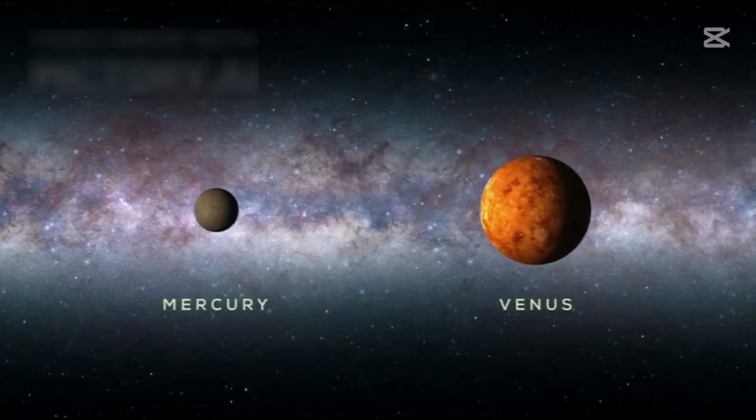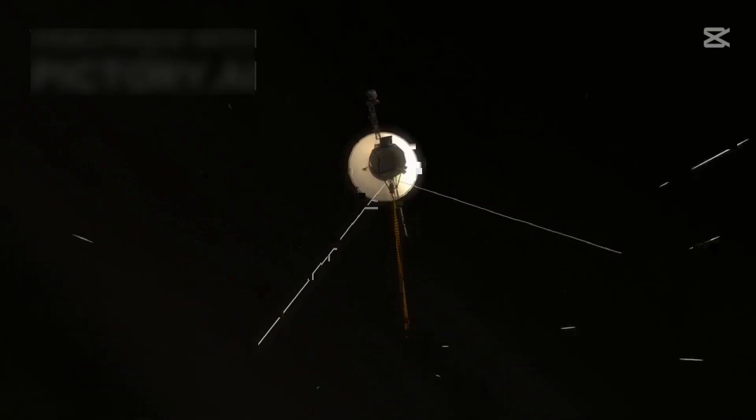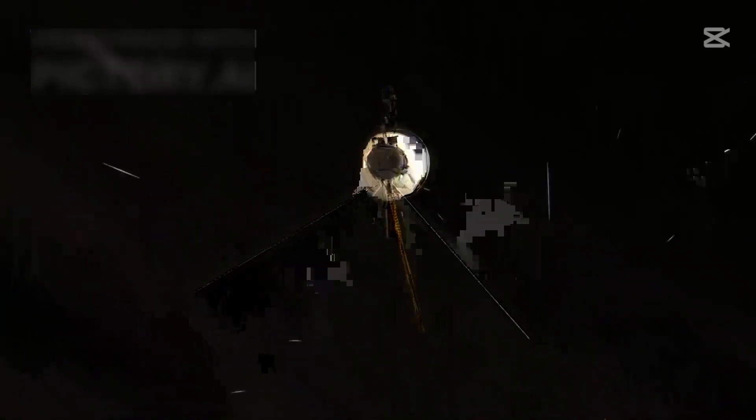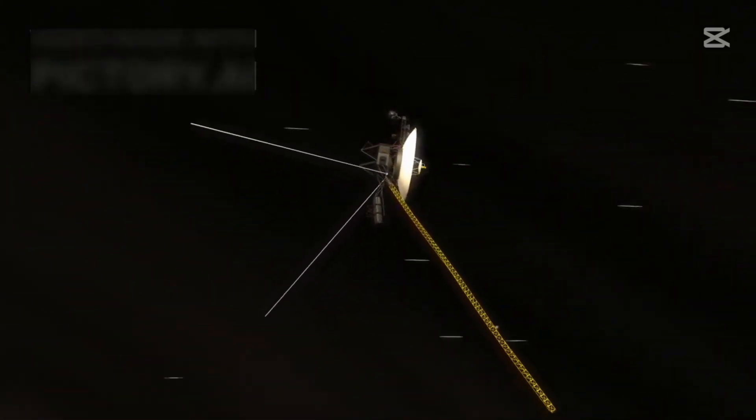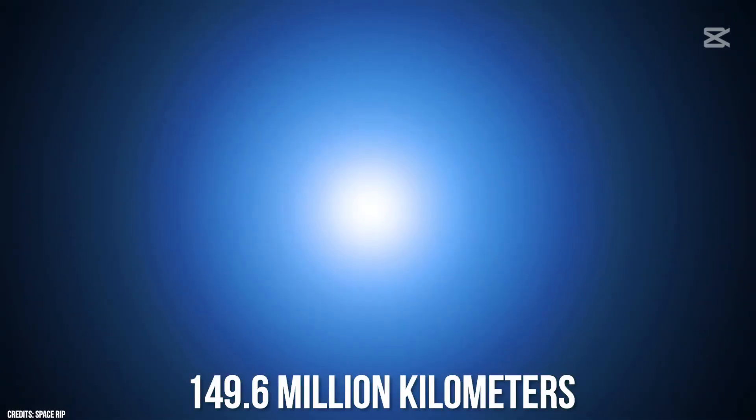If you happen to gaze at VY Canis Majoris in the night sky tonight, you are seeing light that left that star over 640 years ago, well before Christopher Columbus set sail for the Americas. It's incredible to think that this light has journeyed across the universe for centuries before finally reaching us.